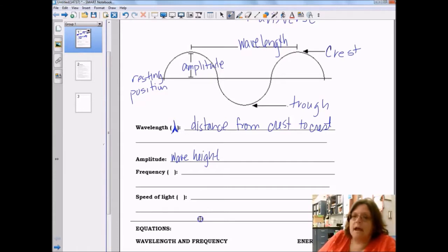Frequency is how often a wave comes by and we use the Greek letter nu, which is a small N, but in the actual letter itself looks like a V, a V that's blowing in the wind.